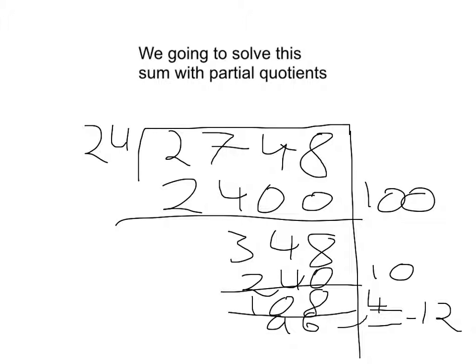So, now I add up all of these, which will become 114, remainder 12. But also known as 114.5, because 12 is half of 24. And half is also equivalent to 0.5.